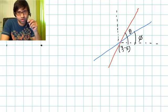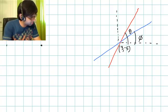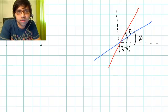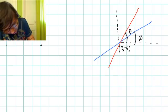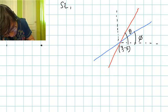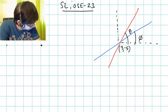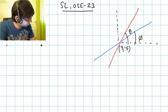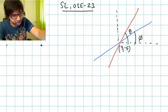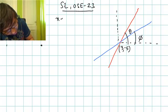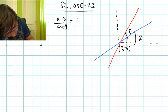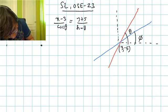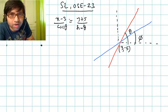This is question number 23, a solved example on the topic of straight lines. In this question, equations of two lines are given: x minus 3 over cos theta equals y plus 5 over sine theta. You can see the first line is passing through the point (3, minus 5) and making angle theta with the x-axis.